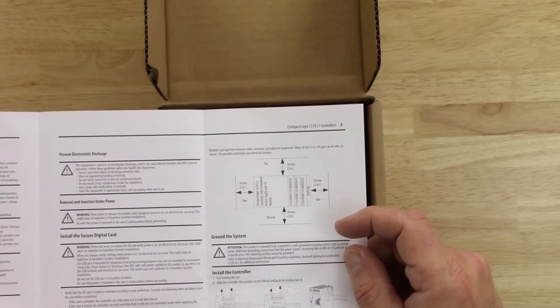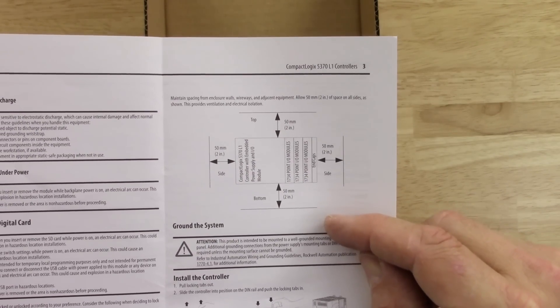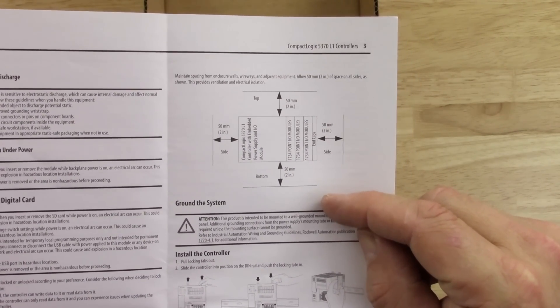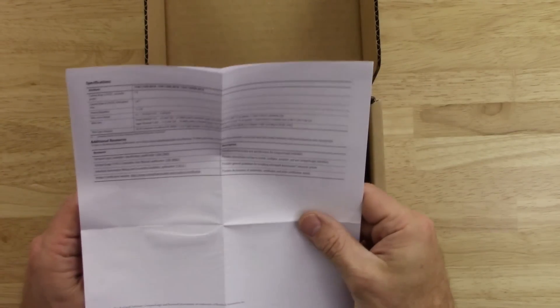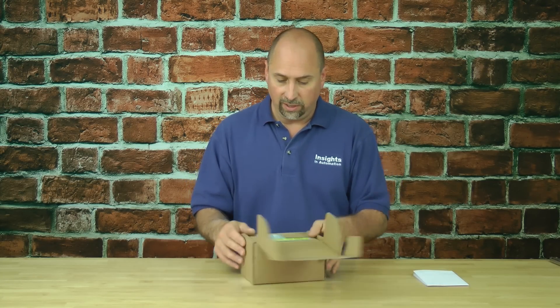Here they're showing us the minimum spacing requirements that is needed. So that's always good to know. You don't want to mount this too close to something else so it will overheat, and how to get additional manuals. Not much in this document. It seems like they could put some more information in there.